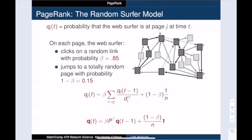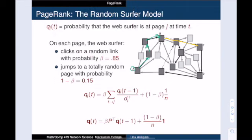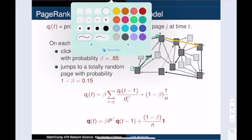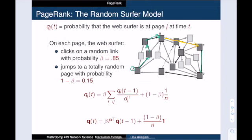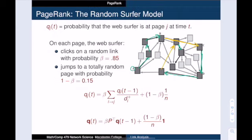And so here we start at page A, we follow a link, we follow a link, we follow a link. At that point, we teleport. So we just go to another random page on the network, and then we go back to following links for a little bit, which we do. And then once again, we decide to move randomly, and begin clicking links once again.